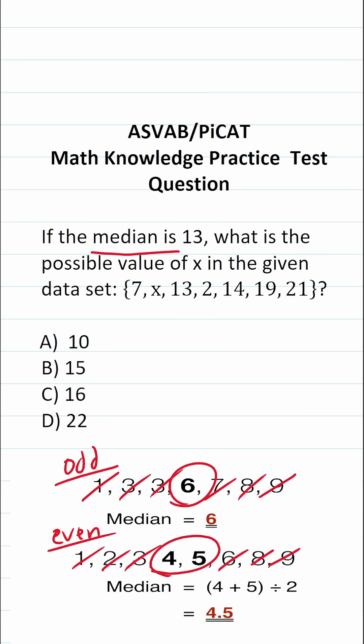So what you're going to do to calculate your median is find the average of those two numbers. So you do four plus five divided by two. So the median of this data set would be 4.5.